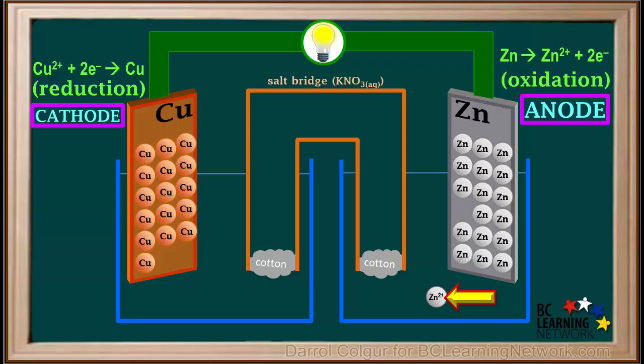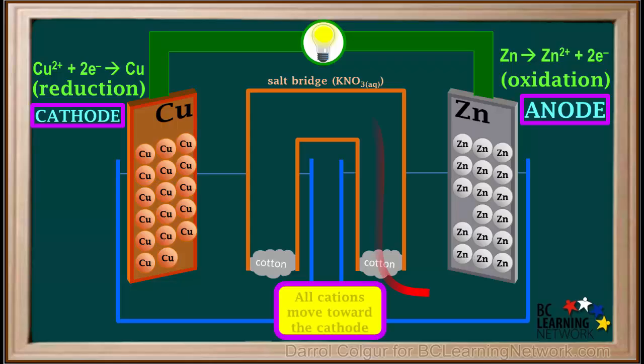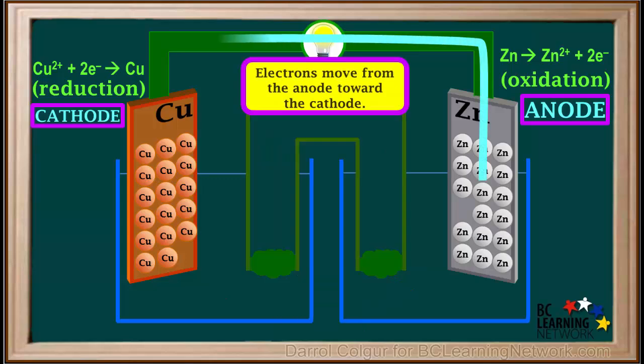If we consider just zinc cations that came from the zinc electrode, they move into the salt bridge as they migrate toward the cathode, just like other cations. Now the copper cations that were already in the copper nitrate solution around the cathode are cations too. So they will not enter the salt bridge, but will also move toward the cathode, where they will be reduced to neutral copper atoms. So we can summarize by saying that all cations move toward the cathode, and all anions move toward the anode, and electrons move from the anode toward the cathode through the wires.